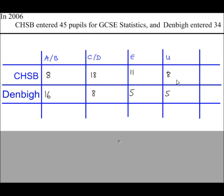This is the grade profile for each school for GCSE stats. For example, in Cholney Boys, 18 boys got grades C or D. In Denby, 5 pupils got grade E and so on.